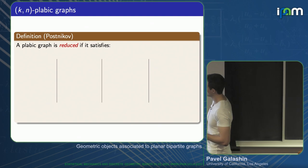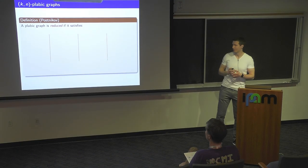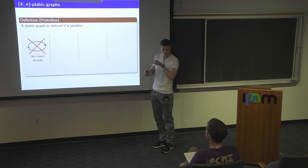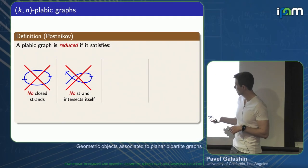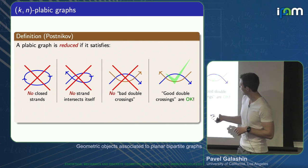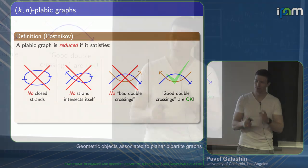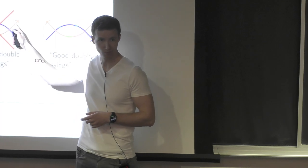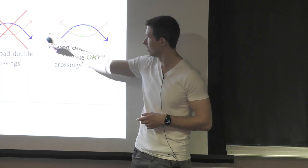Using the strands, you can define the notion of a reduced or minimal plebik graph. A graph is reduced if it satisfies the following conditions: it has no closed strands in the interior — every strand starts and terminates at the boundary. Also, there are no self-intersecting strands. If you have two strands which intersect twice, they're not allowed to pass in the same direction from one intersection point to the other — they have to pass in the opposite direction.